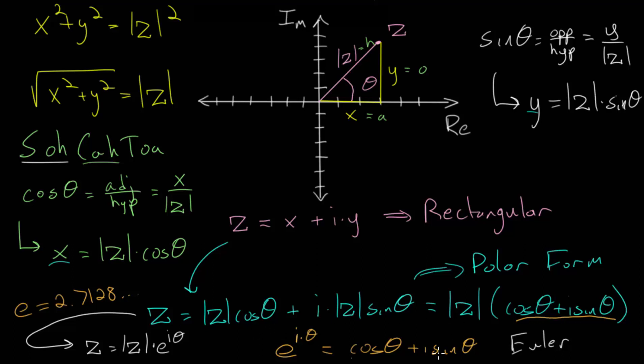And one of the amazing ideas that comes out of this equation is that if you set theta equal to pi, then e to the i times pi will be the cosine of pi, which is negative 1, plus i times the sine of pi, which is 0. And you can rearrange this to get e to the i times pi, plus 1 is equal to 0.